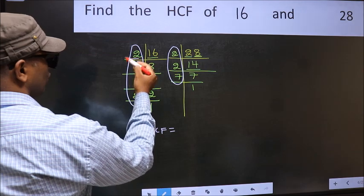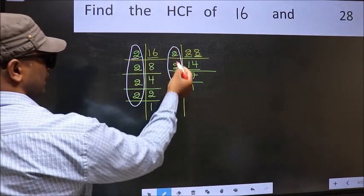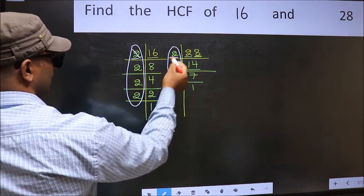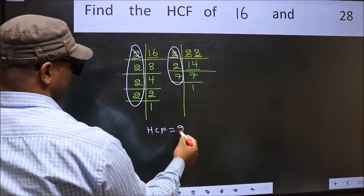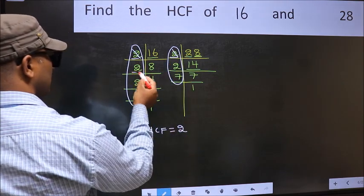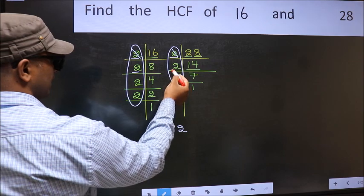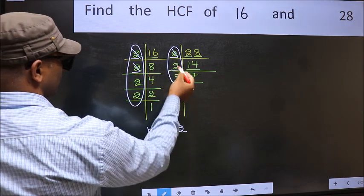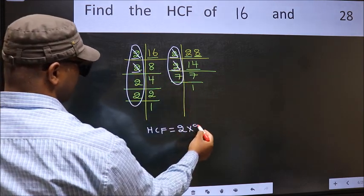Starting with the number 2, do we have 2 here? Yes, so cut 2 right here. Next number 2, do we have 2 here? Yes, so cut 2 right here.